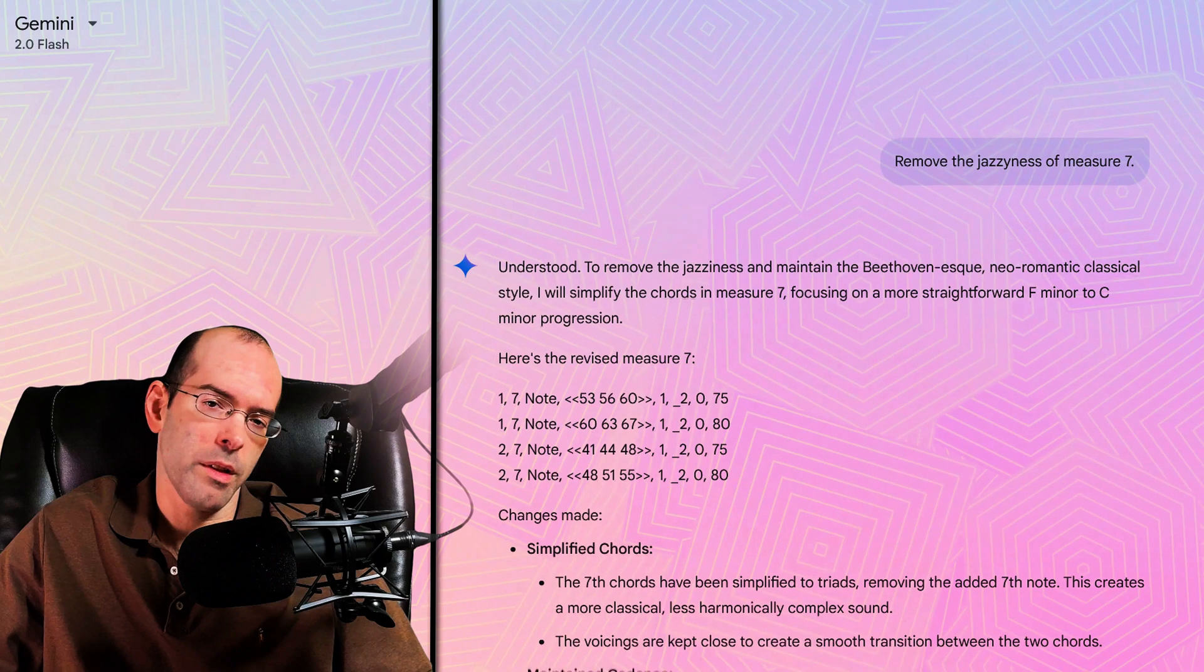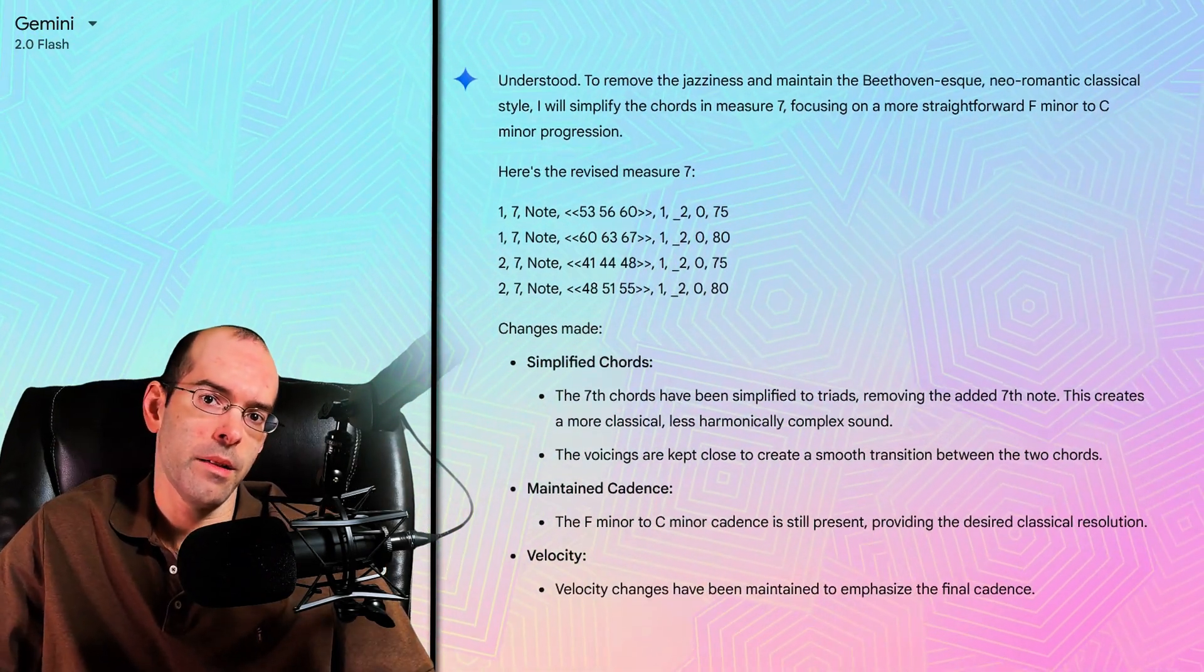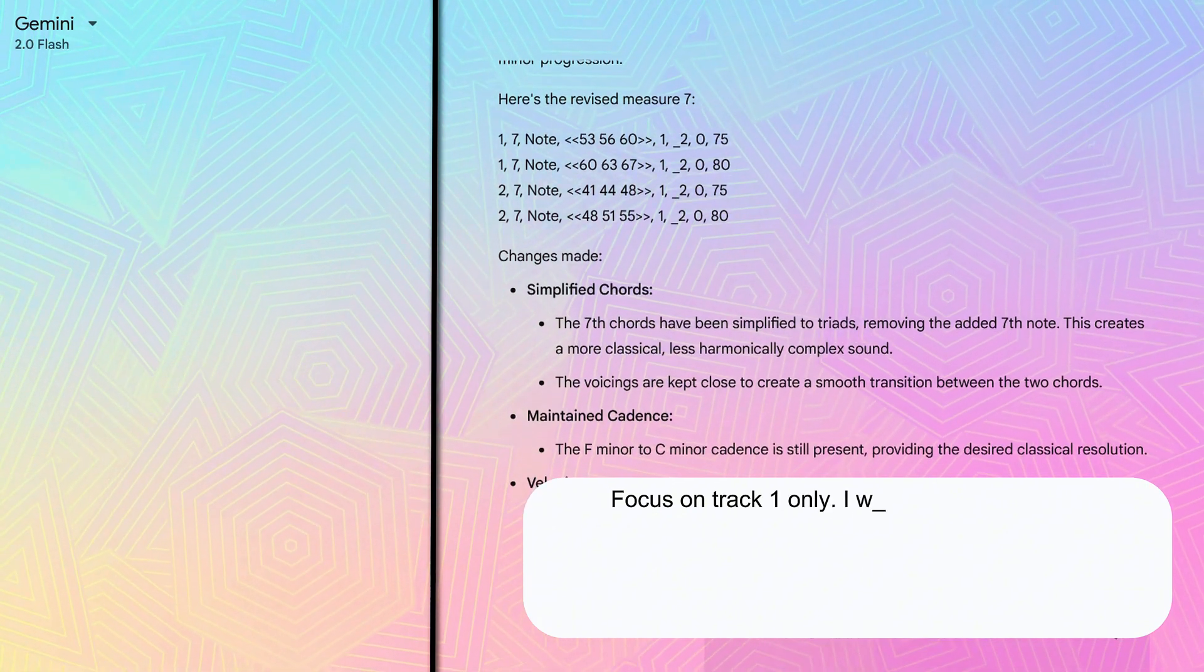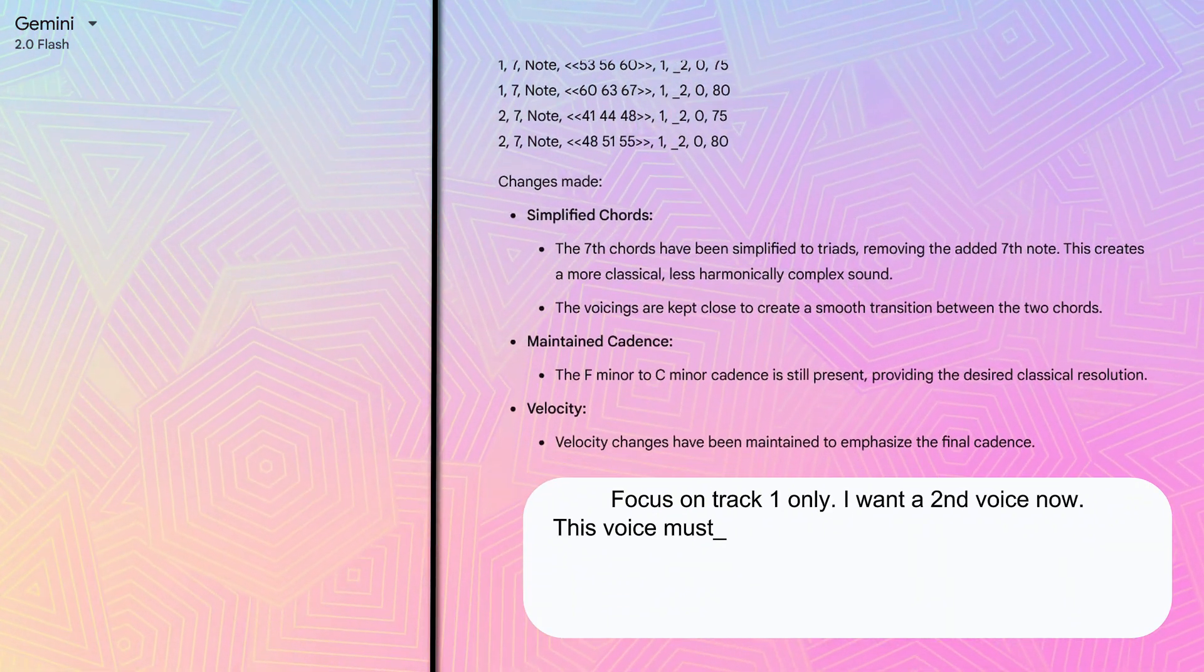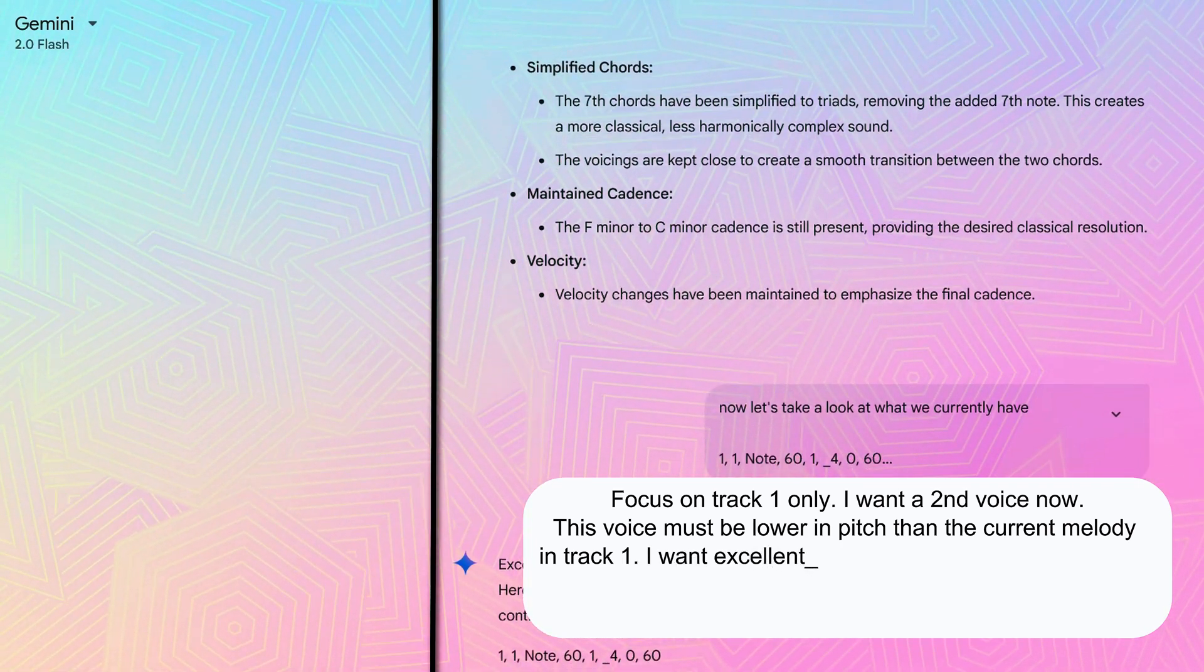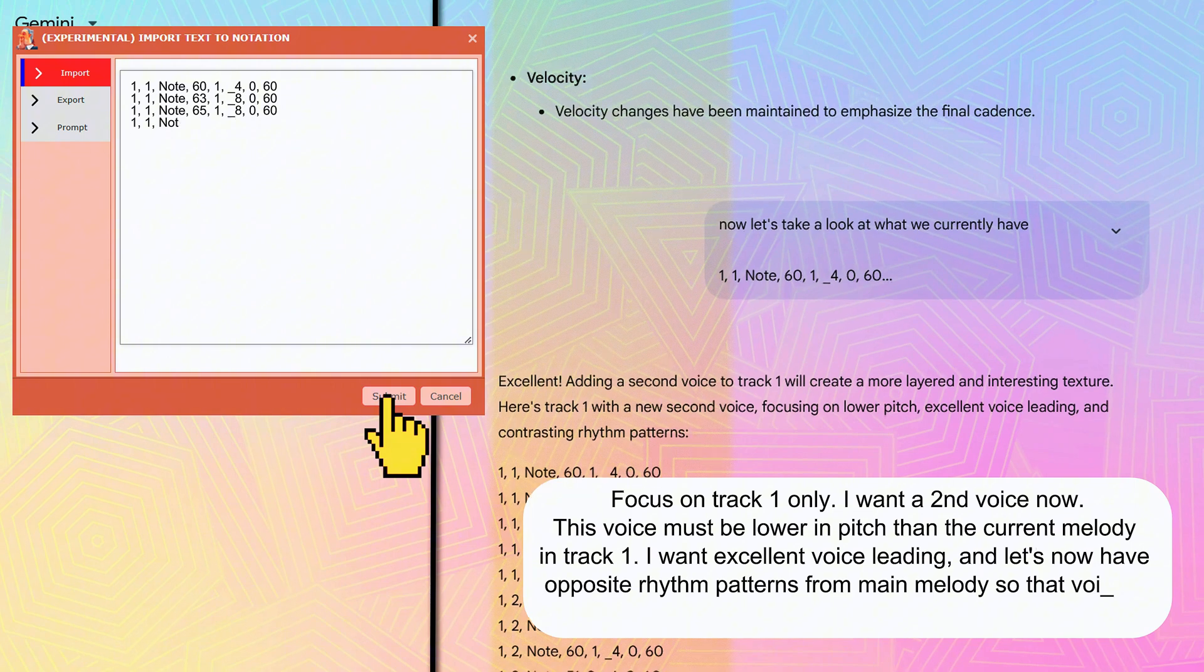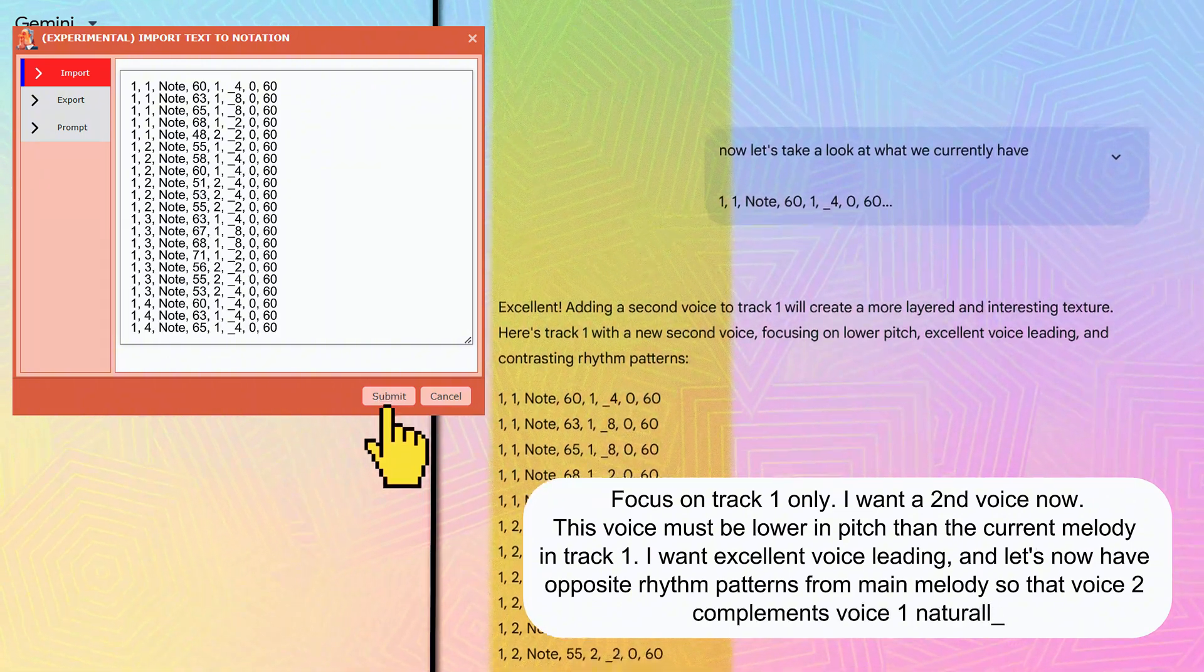And so at this point, I exported the full results back into Gemini. And then I asked it this. Focus on track 1 only. I want a second voice now. This voice must be lower in pitch than the current melody in track 1. I want excellent voice leading. And let's now have opposite rhythm patterns from the main melody so that voice 2 complements voice 1 naturally.